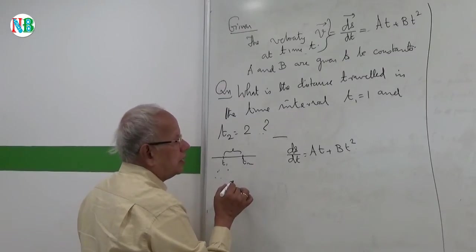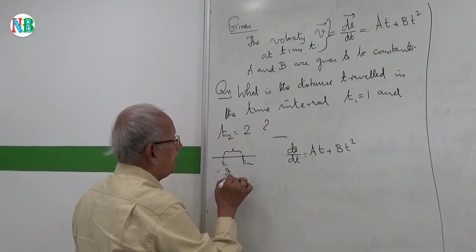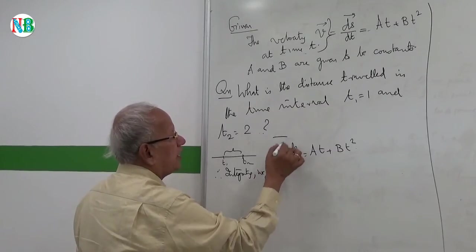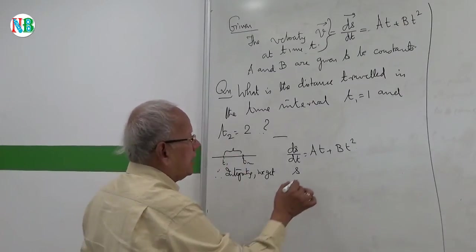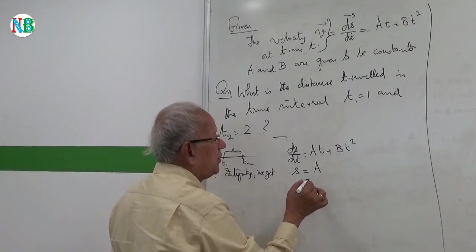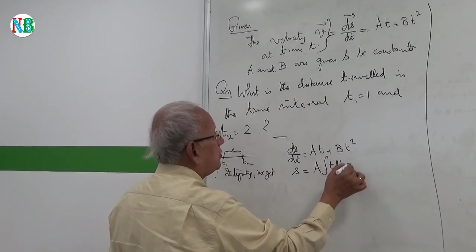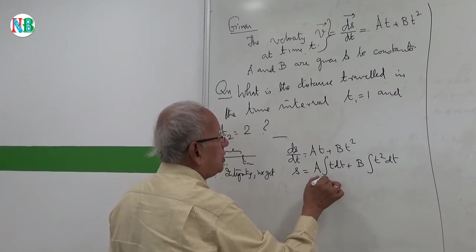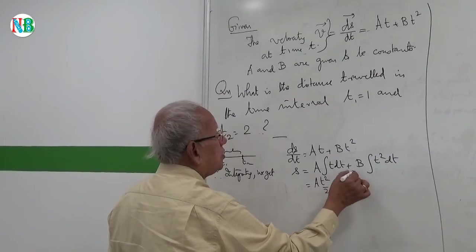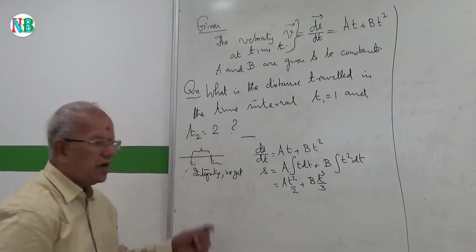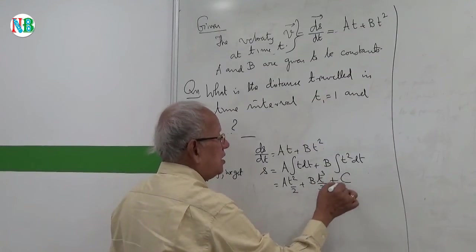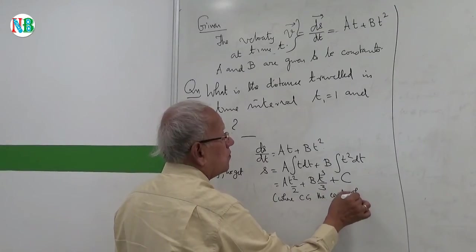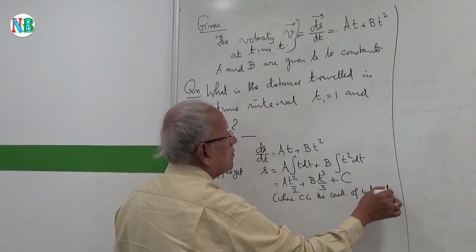This is the velocity at time T. Therefore, let me integrate. Integrating, we get, what do you get? If I integrate ds by dt I will get s, right? And this is, A is a constant, integral t dt plus b is a constant I pull it out, integral t square dt. So this is A times t square over 2 plus b times t cube by 3. But we are integrating so we should add a constant of integration, so plus c, where c is the constant of integration.